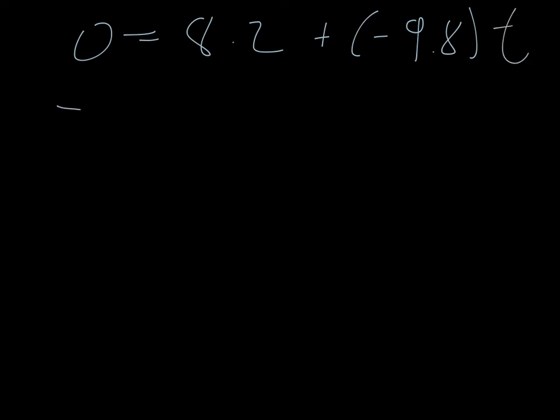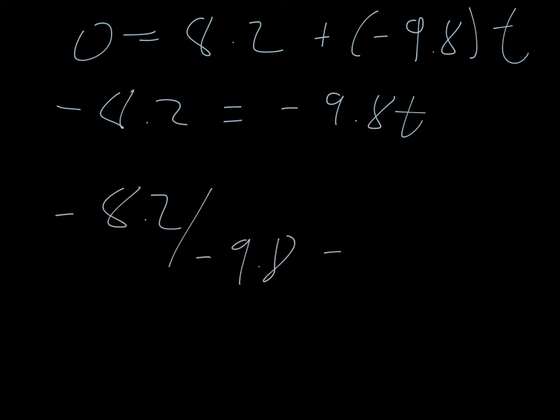That is to say, I have a negative 8.2 equal to a negative 9.8 t, or a negative 8.2 over a negative 9.8 equals time. Which I can come over really quickly and use my calculator and say, 8.2 divided by 9.8 is time equal to 0.83, 0.84 seconds, depending on how you want to round it.